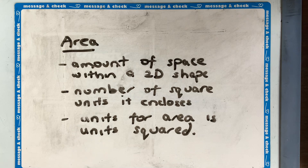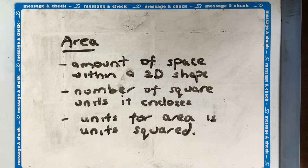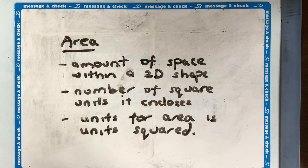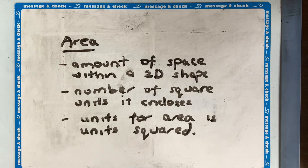Area is different from perimeter. Perimeter is calculating the length of the outside edge of an object, while area is the amount of space within a two-dimensional shape. It's also the number of square units it encloses. Remember, the units for area are always units squared — so you could have centimeter squared, meter squared, kilometer squared, and so forth.